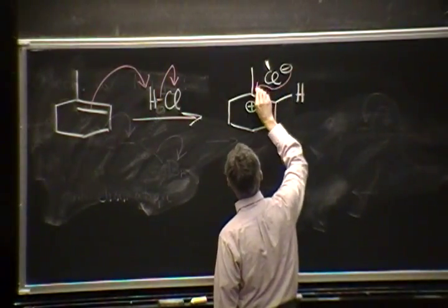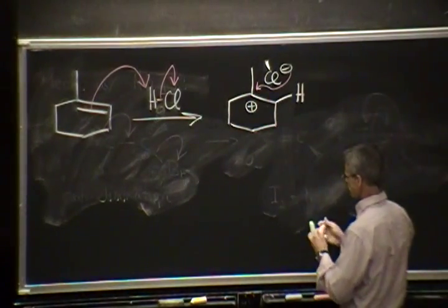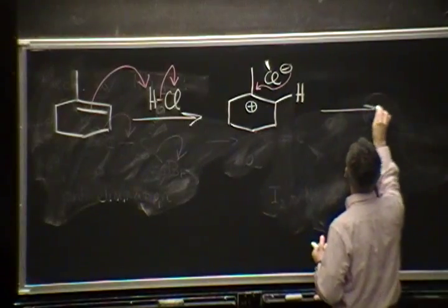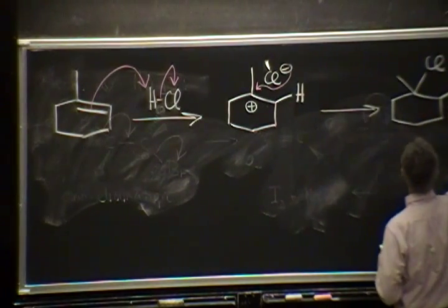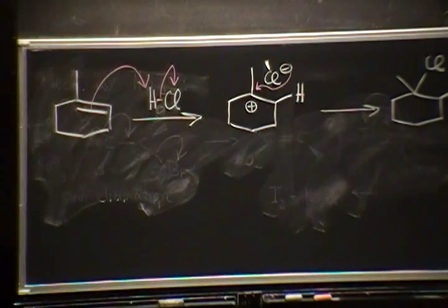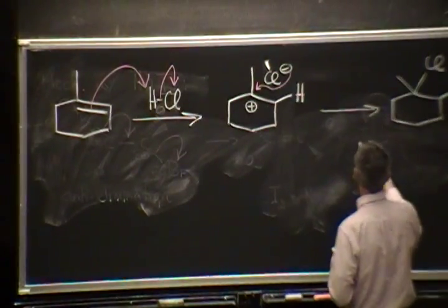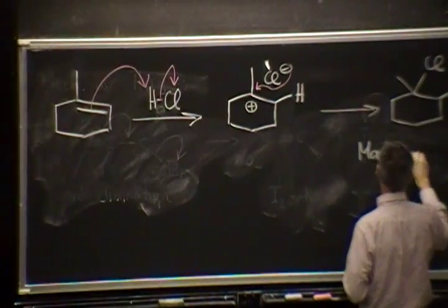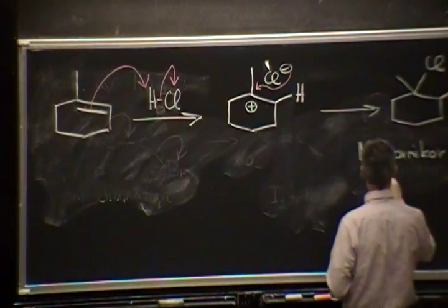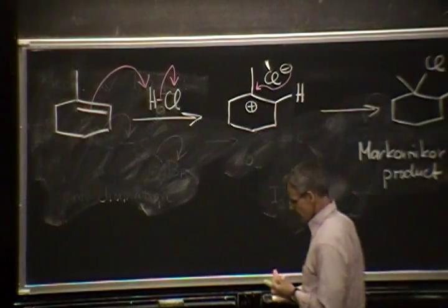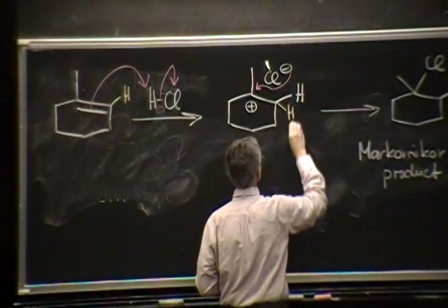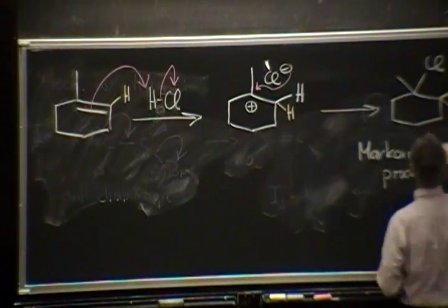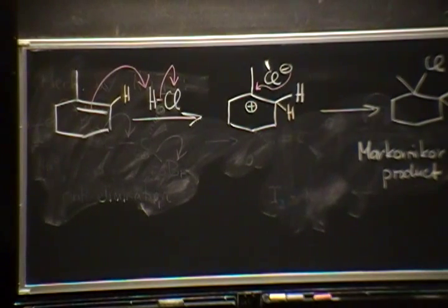And then, of course, the recombination that gives us our product. And the product is the tertiary chloride. Again, this would be the Markovnikov product. And the reason is, of course, we already have the hydrogen here. So, again, you add the hydrogen at the less substituted terminus of the double bond. That's how you get your Markovnikov product.